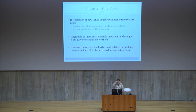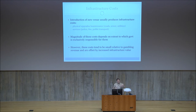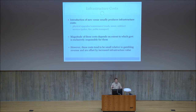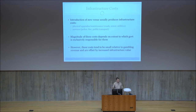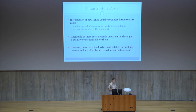Infrastructure costs — the introduction of a new venue usually produces some infrastructure costs because a new casino will tax the utilization of sewer, roads, electricity, police, fire, and public transport. The magnitude of these costs depends on the extent to which cost is taken up by government rather than the casino developer. These costs tend to be relatively small relative to gambling revenue and are usually offset by the increased infrastructure value. So infrastructure costs do exist for certain forms of venue-based gambling, but they're not large and tend to be offset.